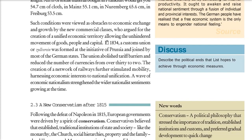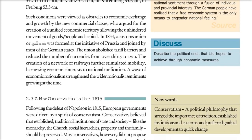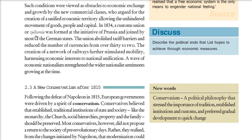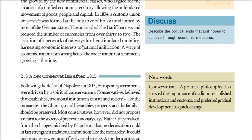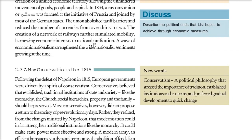So in 1834, the Zollverein was formed on the initiative of Prussia and was joined by most of the German states. They abolished tariff barriers and reduced the number of currencies from 30 to just 2. The network of railways was improved, stimulating mobility. This created an interest in national unification. This is how economic nationalism came from the sentiments of national unity.